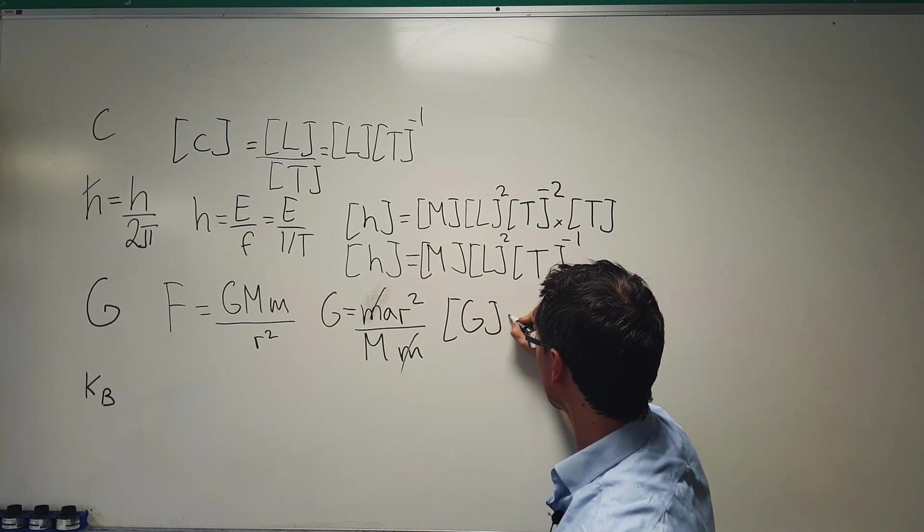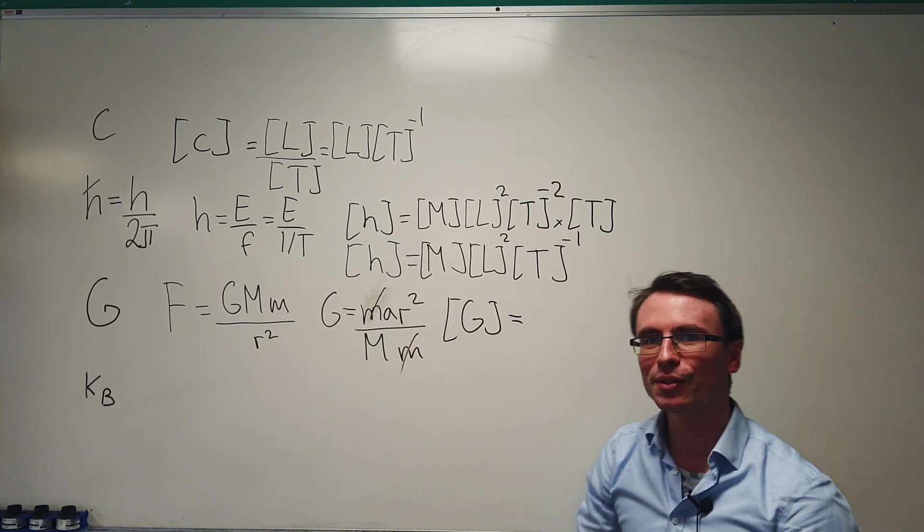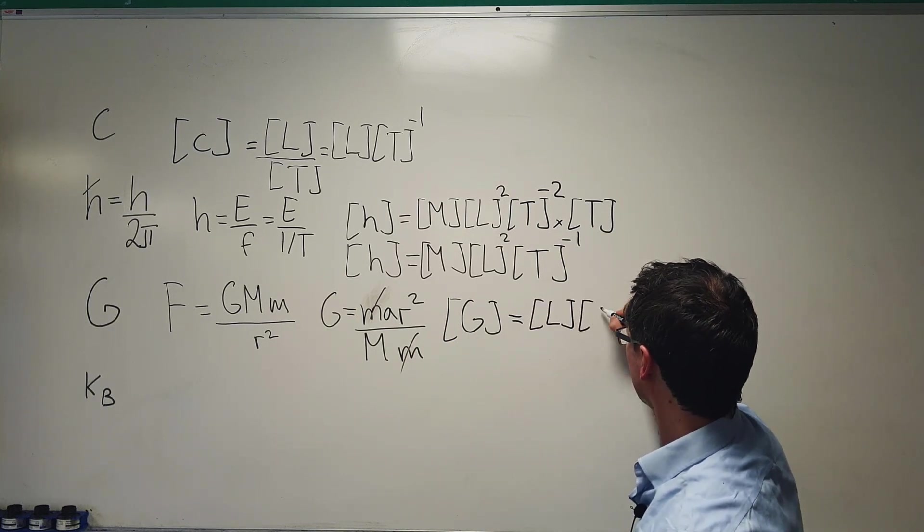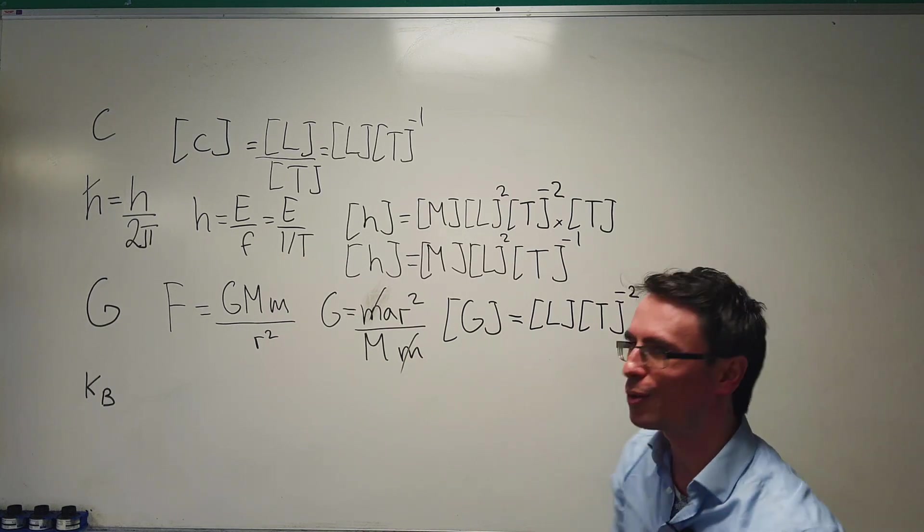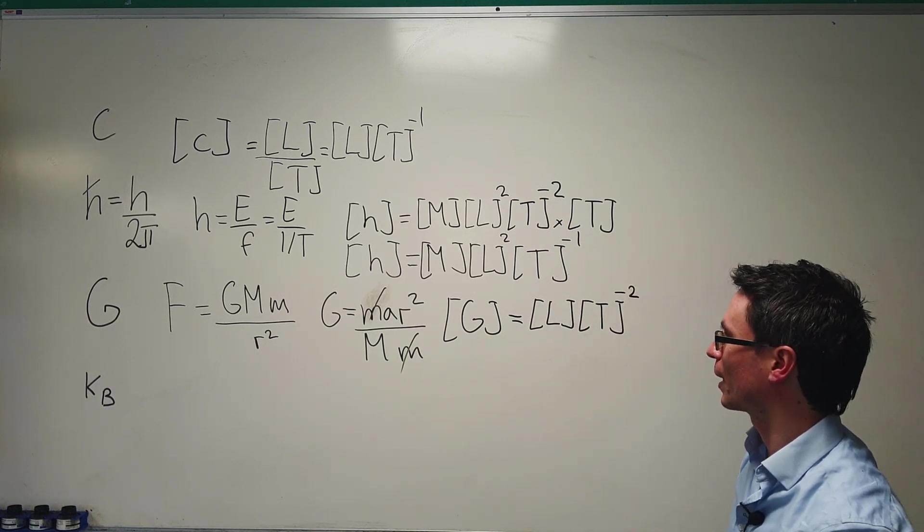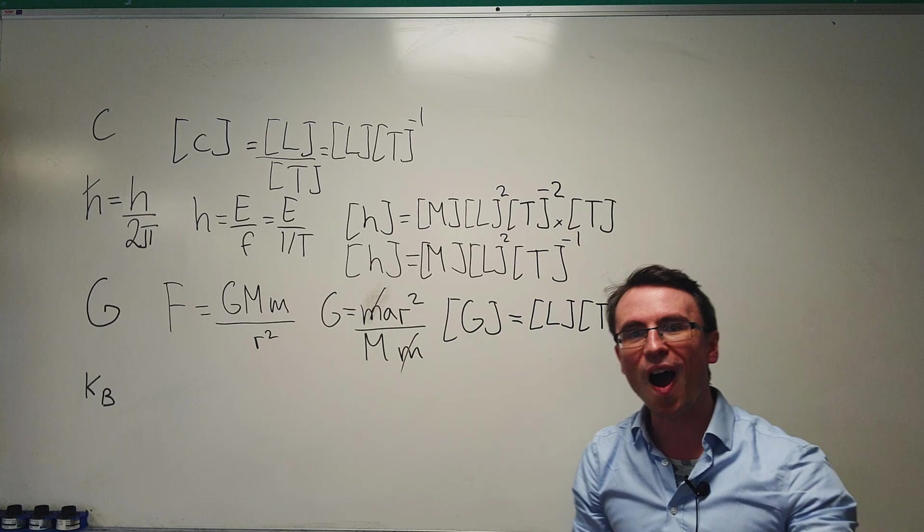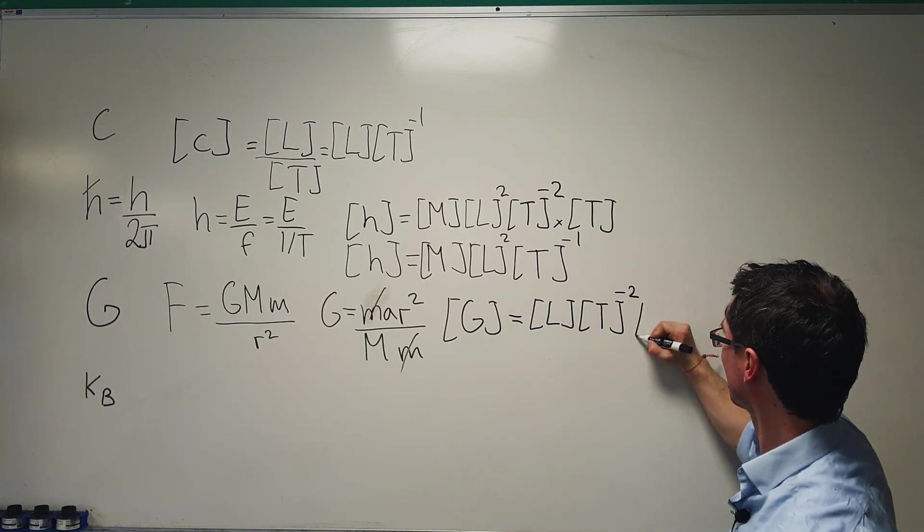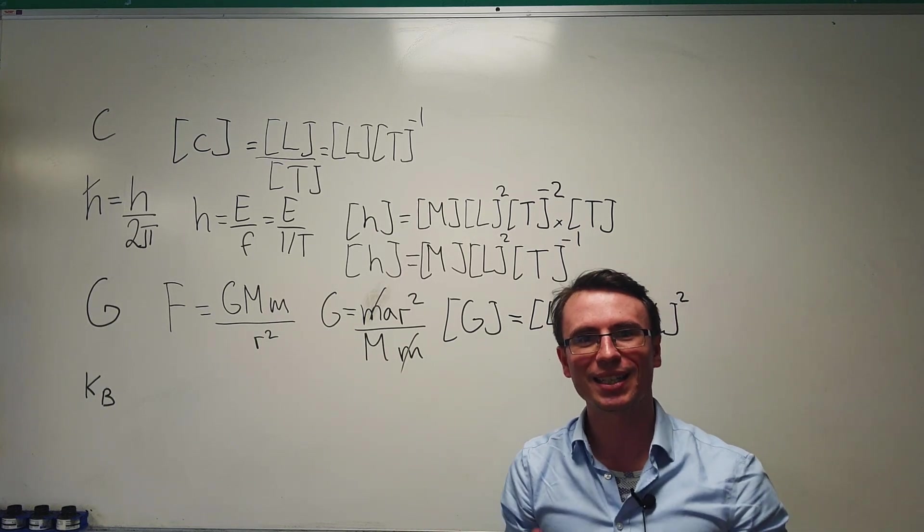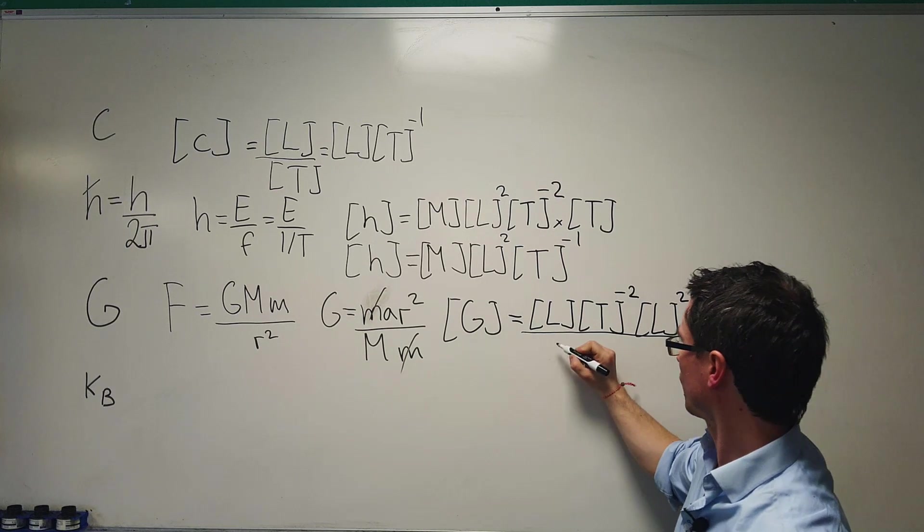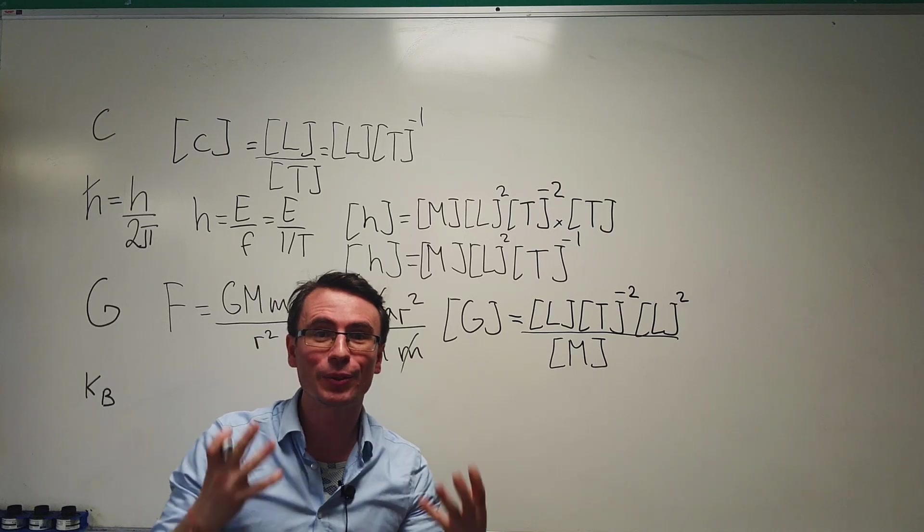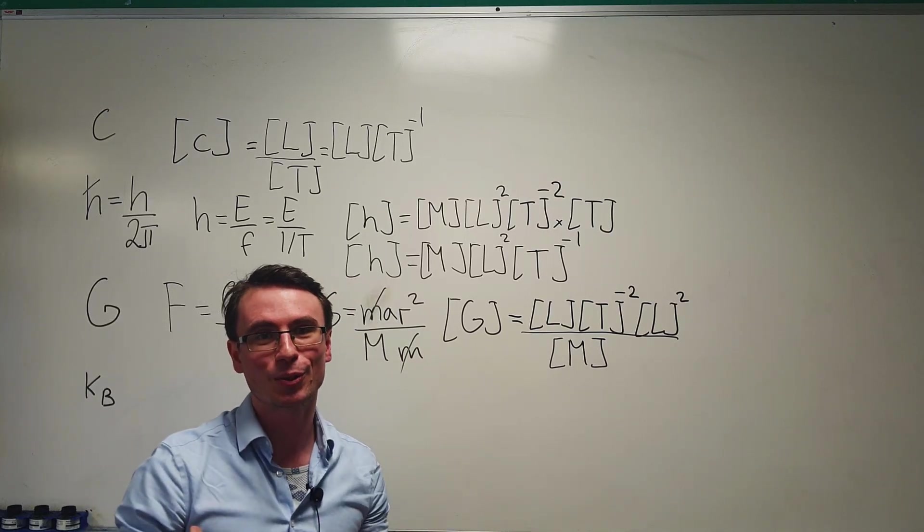I can make this expression even simpler. The dimensions of G will be equal to the dimensions of acceleration, which are going to be L, and then we're going to have T to the power of minus two. Remember, for instance, acceleration is given in meters per second per second, hence the power of minus two here. Then we're going to be multiplying by R squared, which has dimensions of length squared, and let's divide by the dimensions of mass. So I can just literally write it down like that. And these are the fundamental dimensions of the fundamental constants.